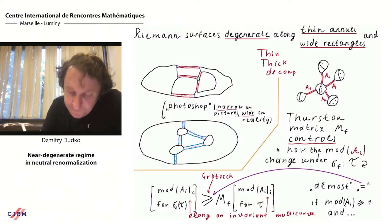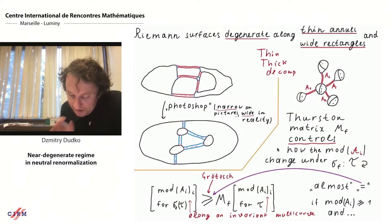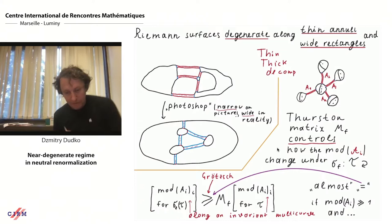This is because our map on annuli is a covering map, and we understand what happens with covering maps; the map on thick parts belongs to some compact set. This is the idea of how we establish an invariant compact set under the Thurston iteration. Of course, I've skipped a lot of details.